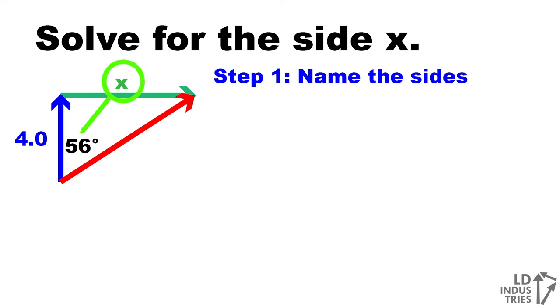And look at the side that's across from that angle. That will be the opposite side of the triangle. So in this example, the opposite side will be what we're solving for. It'll be x.